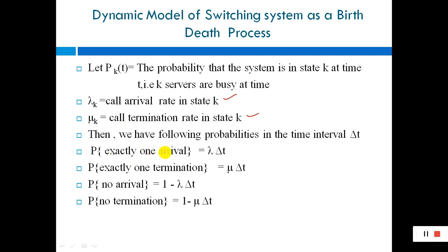In the time interval delta T, we have the following probabilities: the probability of exactly one arrival is lambda_K times delta T; the probability of exactly one termination is mu_K times delta T; no arrival has probability one minus lambda_K times delta T; and no termination has probability one minus mu_K times delta T. These equations will be used in the coming slides.